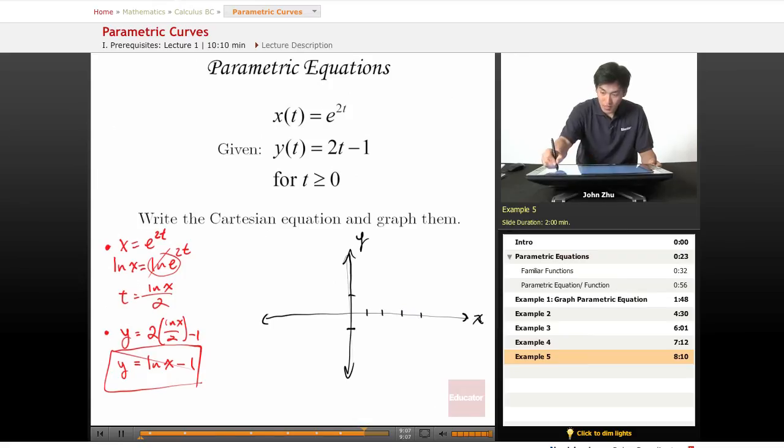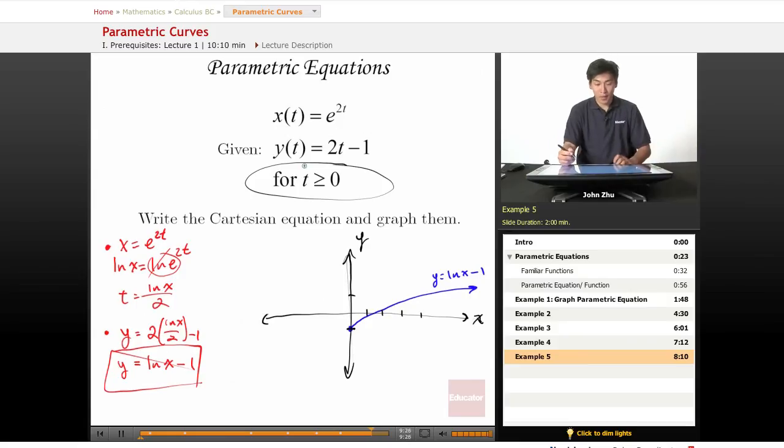So shifting it down by 1 unit, we get something like this. This is ln of x minus 1. And please note that the t here is greater than or equal to 0, which means that our bounds are restricted by this bound.